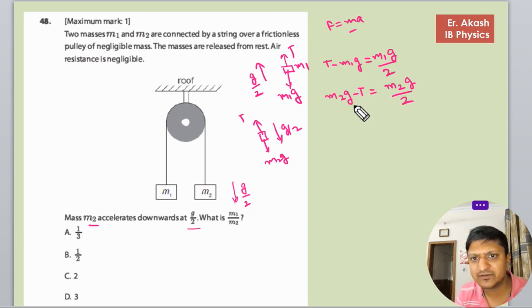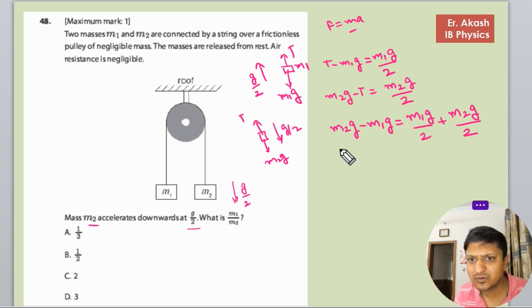When we add the equations, T and T cancel. M2·g minus M1·g equals M1·(g/2) plus M2·(g/2). Now we can simplify by dividing by g.